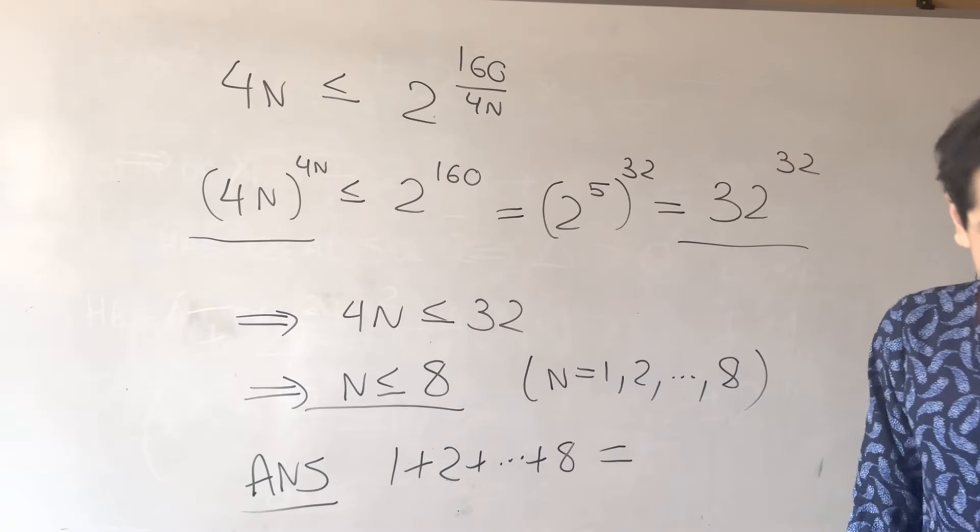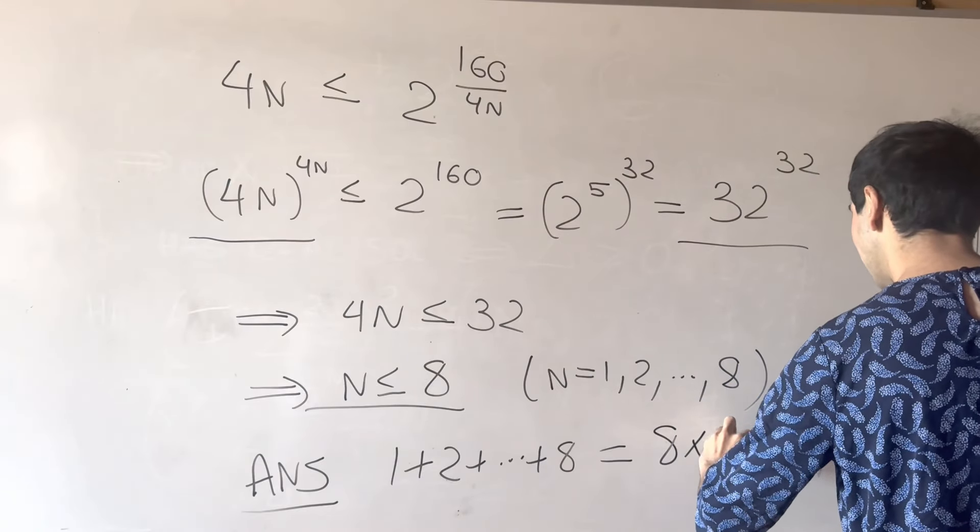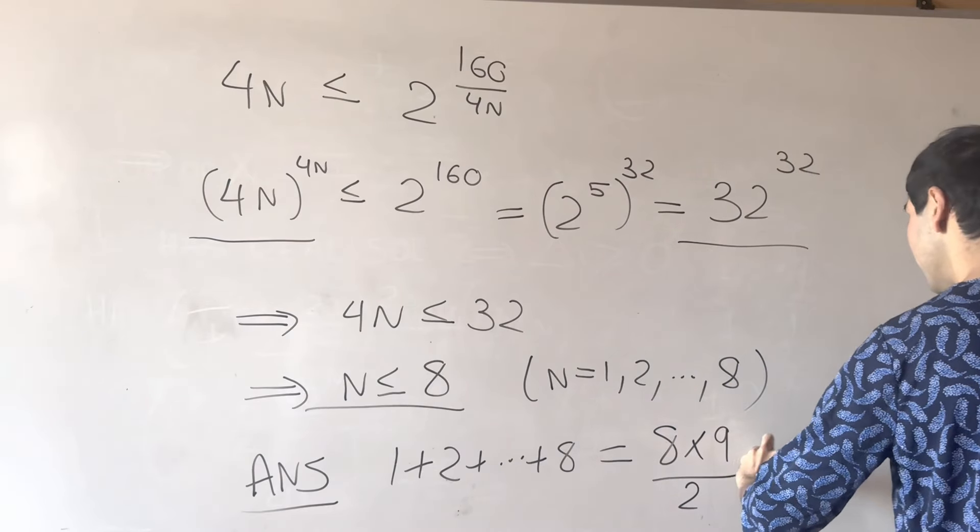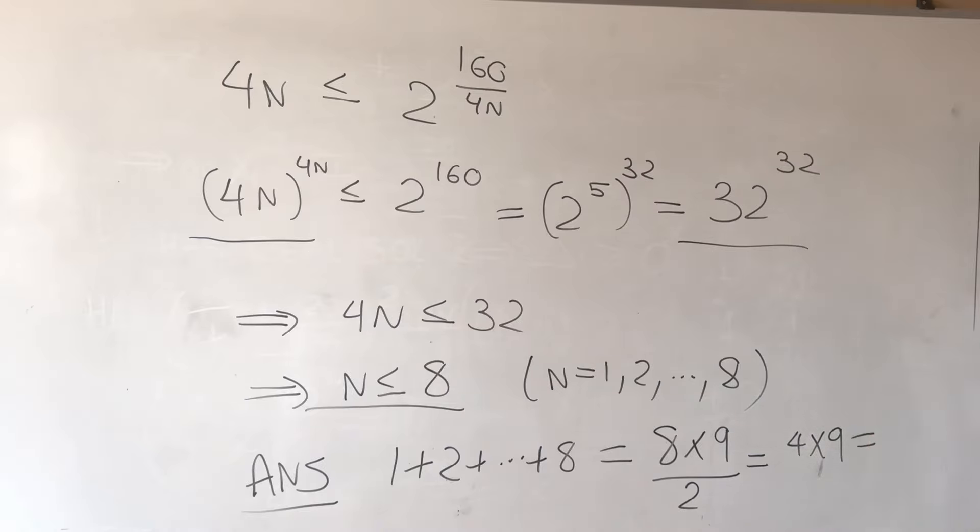Oh, yeah, she ate. And then, what we get is, by Gauss's formula, that's 8 times 9 over 2, and that's 4 times 9, and I believe that's 36.